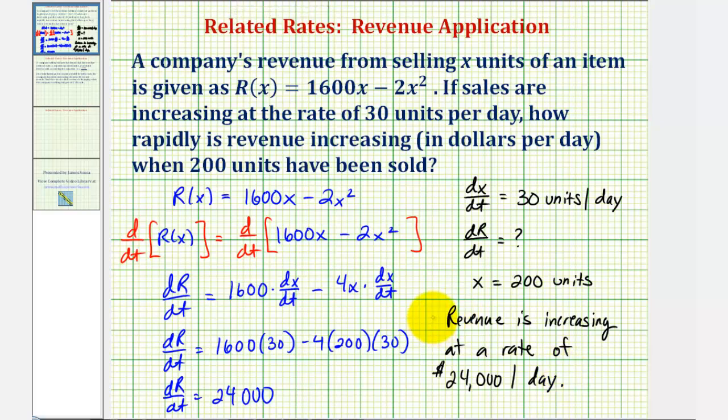It's important to keep in mind that the revenue is increasing at this rate when sales are increasing at 30 units per day and 200 units are being sold. If these values were to change, the rate at which revenue is changing would also change. I hope you found this helpful.